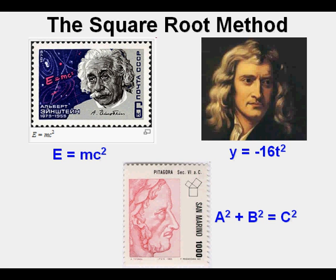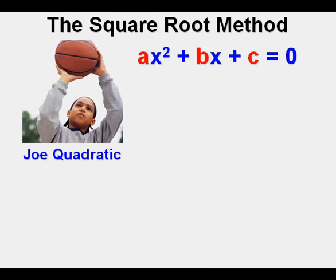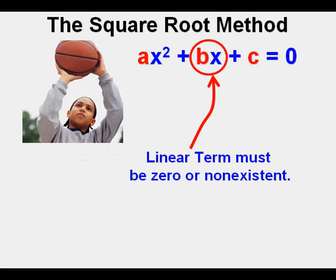Additional examples include D equals 16t squared, and finding the missing side of a right triangle using the Pythagorean Theorem. Taking our friend Joe Quadratic back to the general form ax squared plus bx plus c equals zero — the square root method is perhaps the fastest and easiest way to solve quadratic equations, but it only works under one special condition: the linear term must be zero or non-existent.